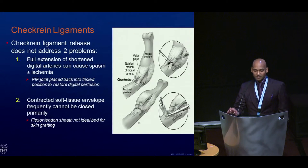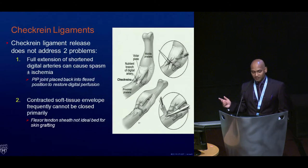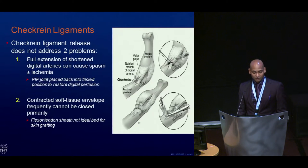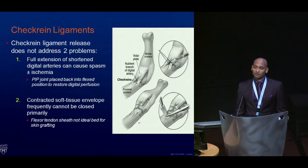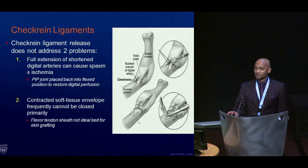With check rein ligaments, there are two additional problems. When you release these acutely, you can get spasm of the digital arteries and possible ischemia. Additionally, with the contracted soft tissue envelope, there is a loss of skin. Once these tissues are released, you must place a skin graft, and the flexor tendon sheath is not an ideal bed for a skin graft.